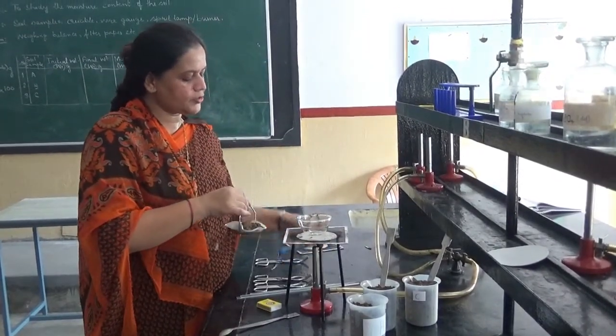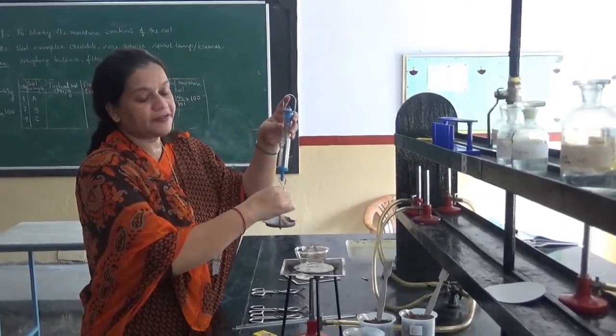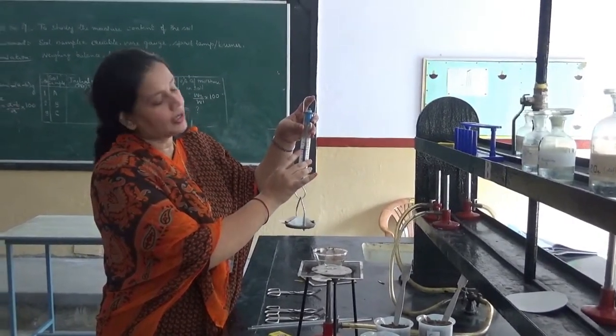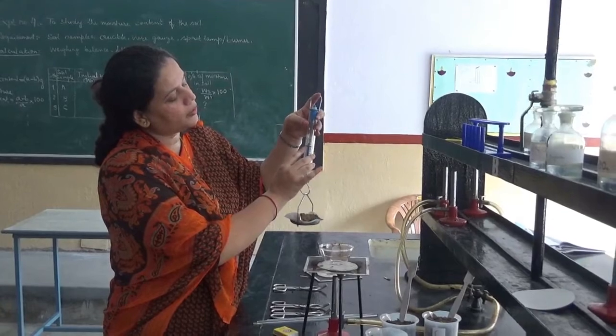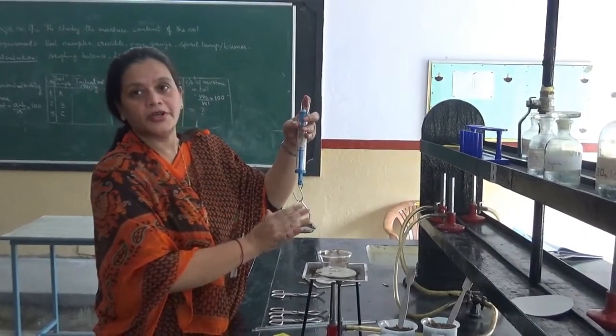Now what we will do is measure it again. I am using the spring balance. I am measuring it again after heating it for 10 minutes. So see the moisture weight has been a little bit lesser. It is now at around 70 grams. So 5 grams of the moisture has been gone.